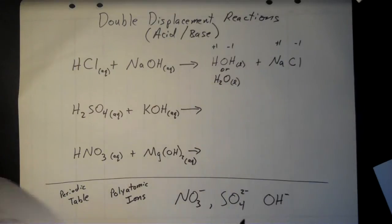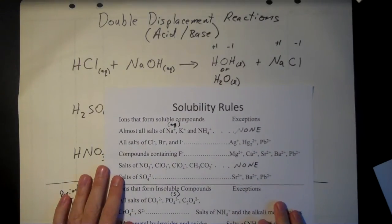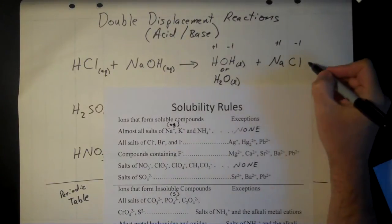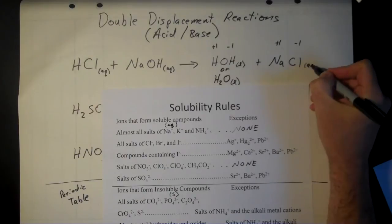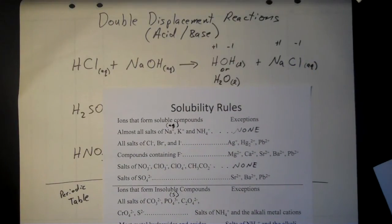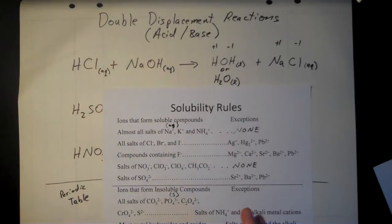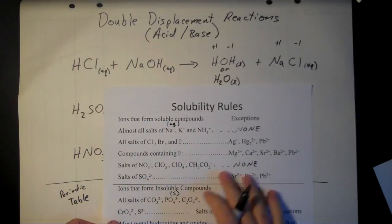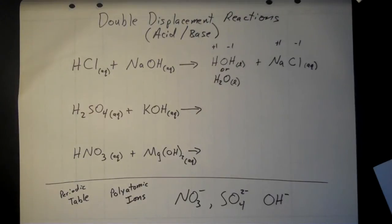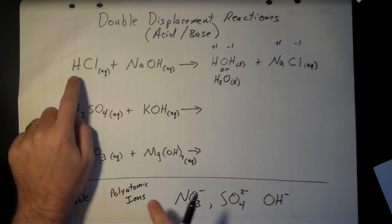Most of the time that ionic product is going to be aqueous. You can bring in your solubility rules just like we did with the precipitation reactions. In this case it's a sodium salt, and from our solubility rules, those are always going to be aqueous.